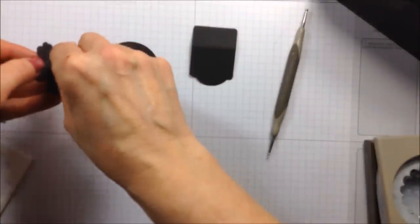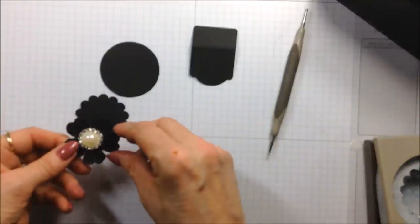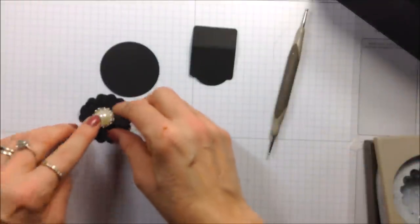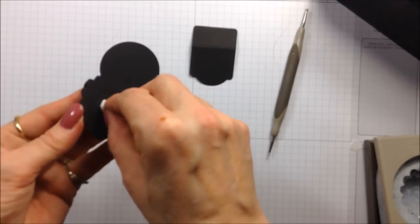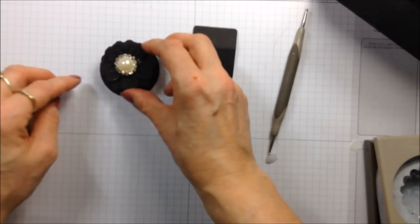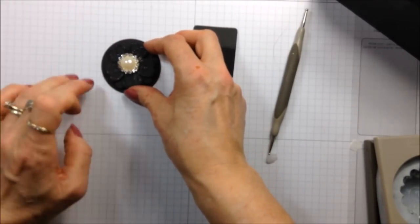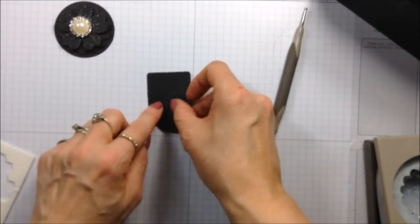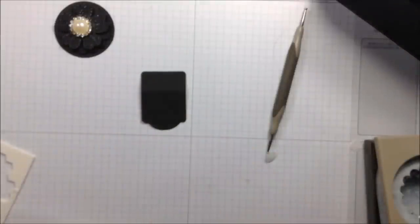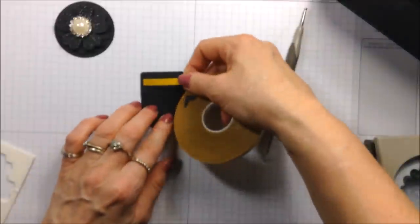So that one's going to go on there like that, and then this one will sit on this circle like that. And then I'm going to put some double-sided tape on here.